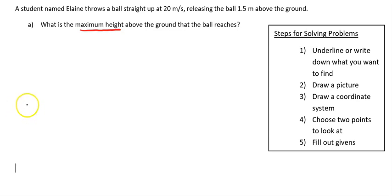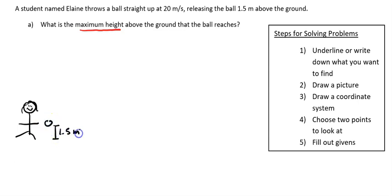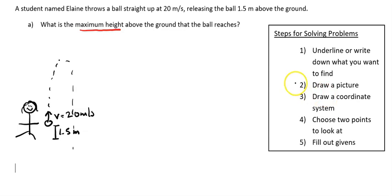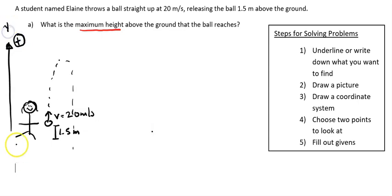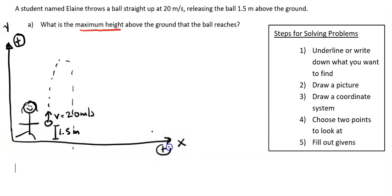I'm going to draw a little picture. I have a nice student named Elaine — she's smiling, so happy to be doing physics. She releases the ball at 1.5 meters above the ground, throwing it up at 20 meters per second. It goes up in the air and then eventually comes back down. Now I'm going to draw a coordinate system — things in the up and down direction are the y direction, and upwards is going to be positive.